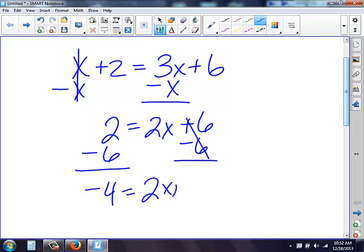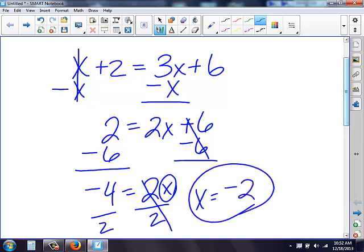Therefore, I'm still getting this x by itself. I need to get rid of this 2. 2 times x, opposite of multiplication is division. So this 2 is gone, the 2's cancel, I just have x, and a negative 4 divided by 2 is a negative 2.